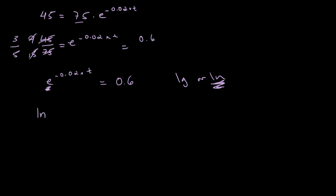So, we take ln of e to the power of negative 0.02 times T equals ln of 0.6. We can use the power law to bring this down as a coefficient. So, negative 0.02 times T times ln of e is equal to ln of 0.6. We know that ln of e is equal to 1, because e to the 1 is equal to e.